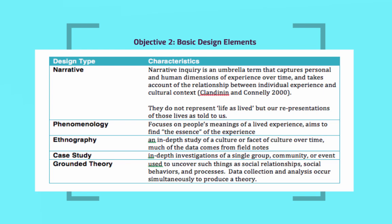In an ethnography, we're going to do an in-depth study of a culture or a facet of culture over time. Much of this data is going to come from field notes. Traditionally, ethnographies were done in the location of the culture, and the researcher moved into the village or just outside of it and observed that culture for at least a year. Now we can do ethnographies a little bit faster, but they still take a lot of time to collect that information. A case study is an in-depth investigation of a single group, community, or event. Grounded theory is used to uncover such things as social relationships, social behaviors, or social processes — data collection and analysis occur simultaneously to produce a new theory.